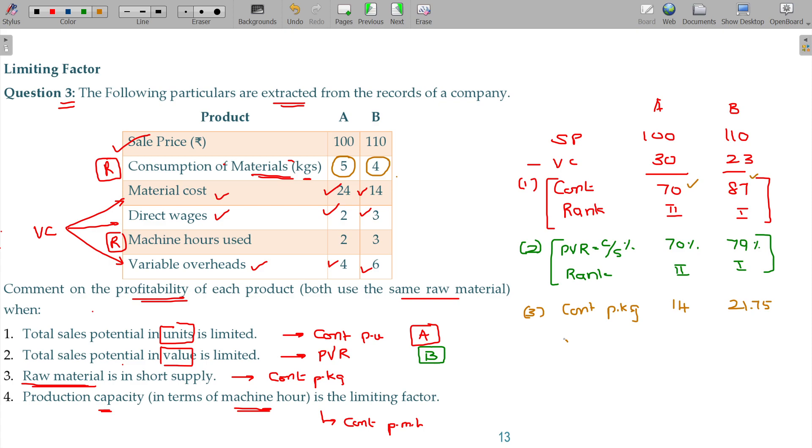You can apply these concepts in practical life also. Contribution per kg: 14 for A and 21.75 for B. Now rank it - between these two, B will be the topper and A will be the second topper. So we can recommend B. In all three cases so far, B is recommended.